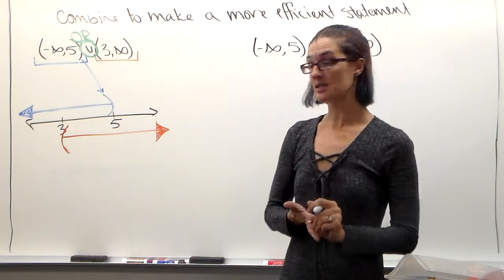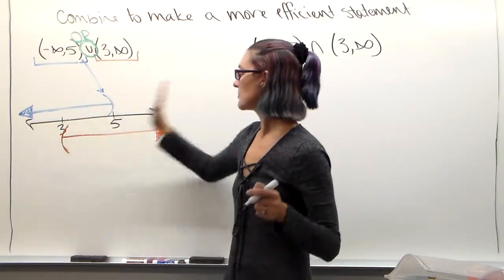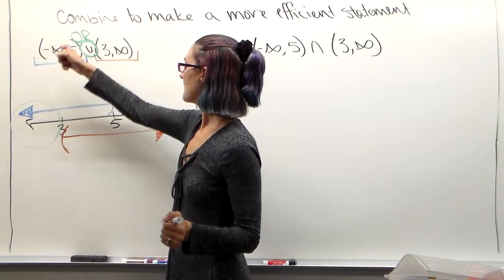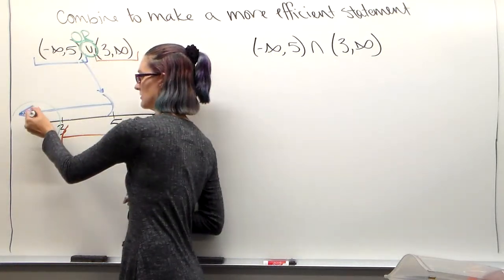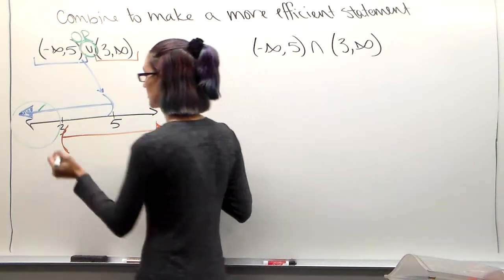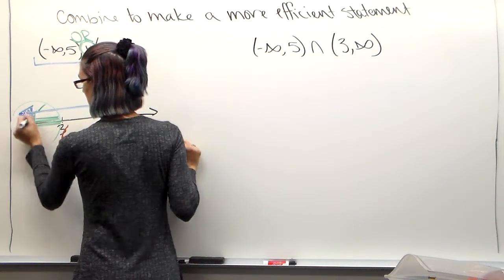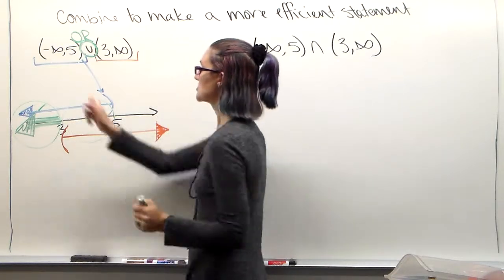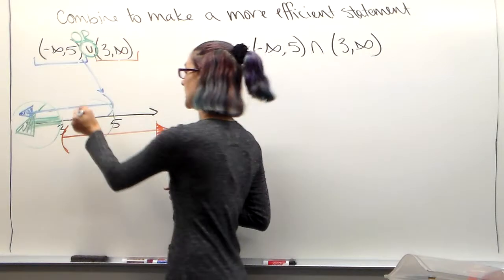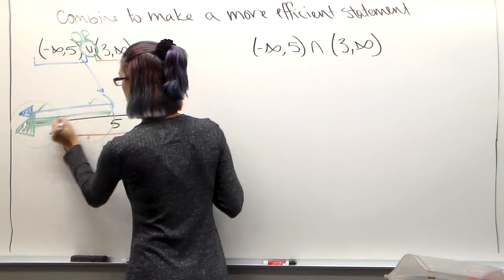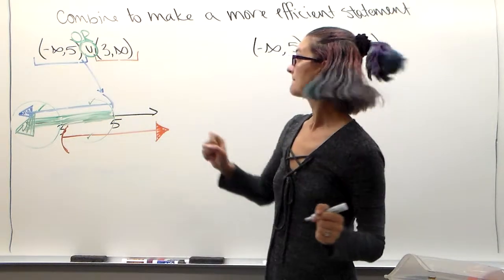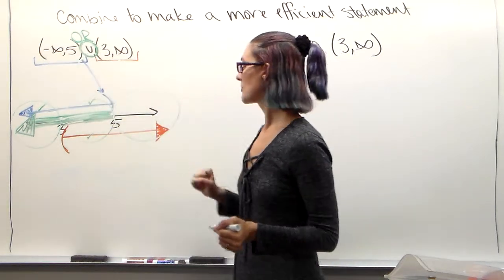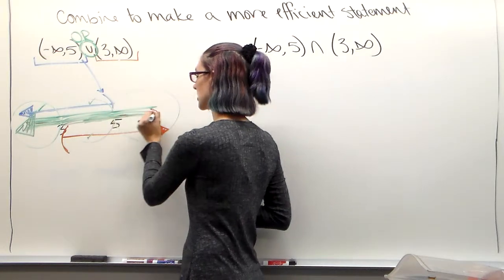There are three different portions to this graph: less than 3, between 3 and 5, and greater than 5. If I look at less than 3, do I have either blue or brown? I have blue — so that's going to be included in my final answer. If I look at between 3 and 5, do I have either blue or brown? Yes, I have both — so my shading continues and includes the center piece as well. Then looking at the last piece from 5 to infinity — that's brown, so it is included as well.